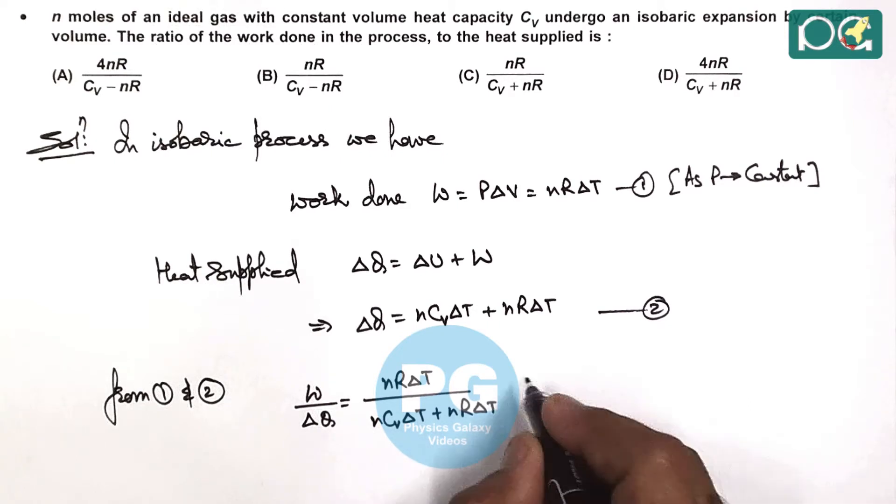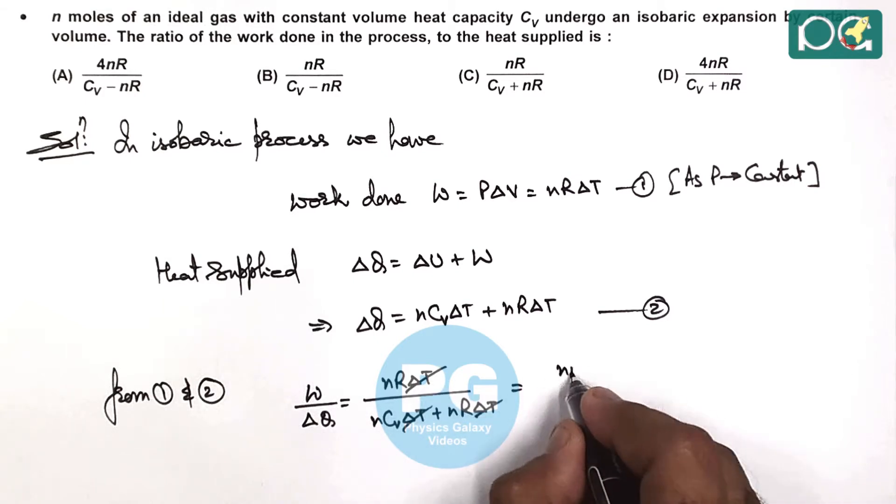Simplifying this, ∆T gets cancelled out, giving us nR divided by Cv plus nR.